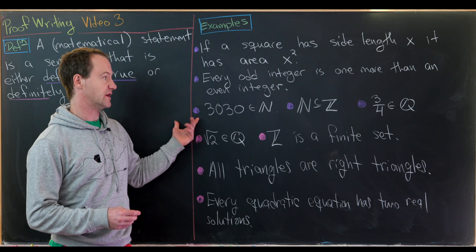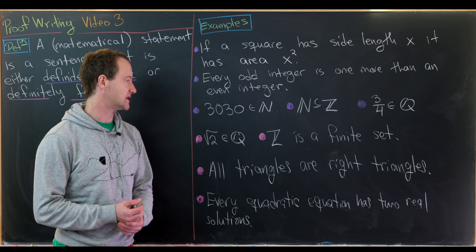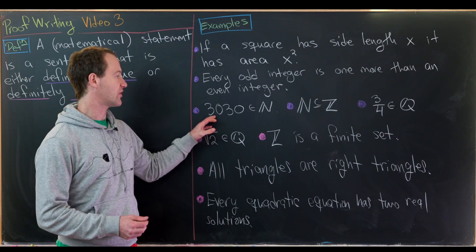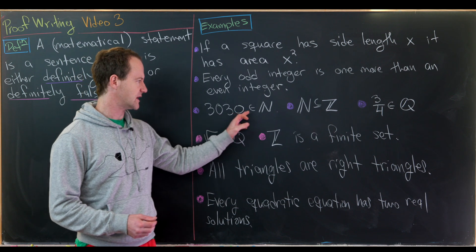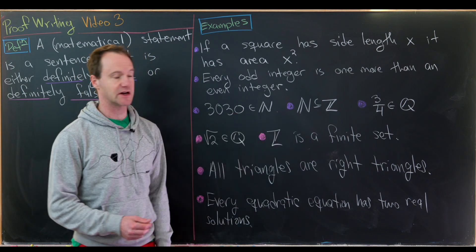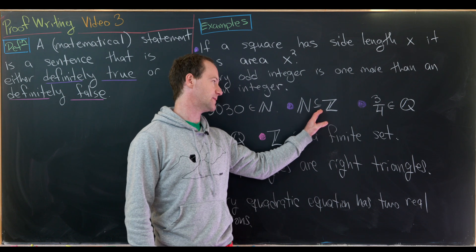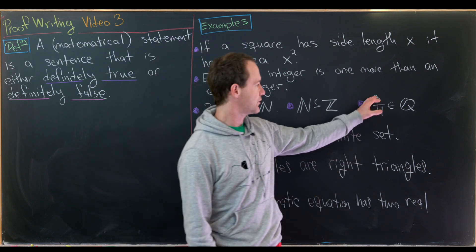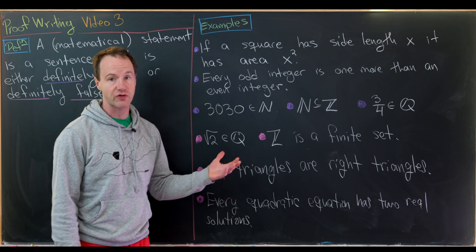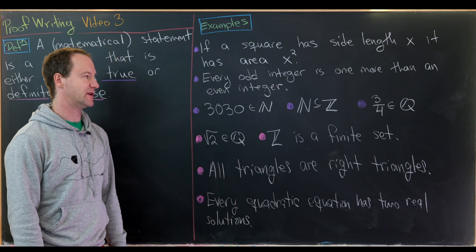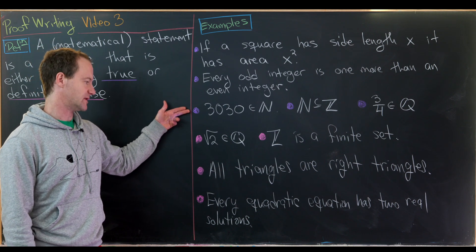Next we have three statements written in mathematical notation that we can read as complete sentences: 3030 is a natural number, meaning 3030 is an element of the natural numbers; the natural numbers form a subset of the integers; and three-quarters is a rational number, i.e., ¾ is an element of the rational numbers. Again, these are all true mathematical statements.